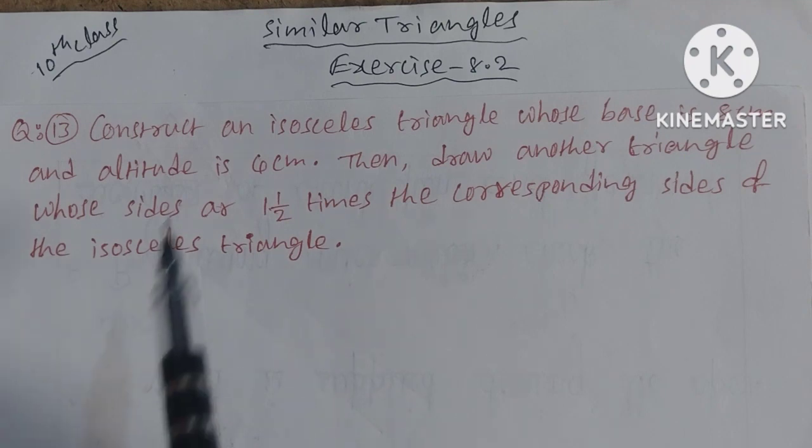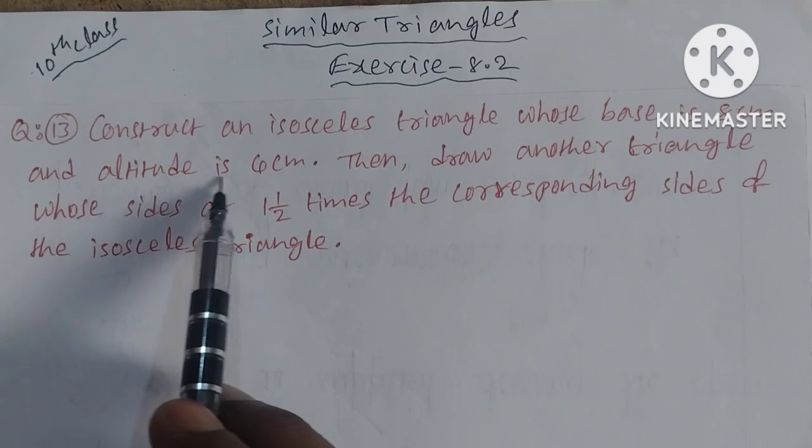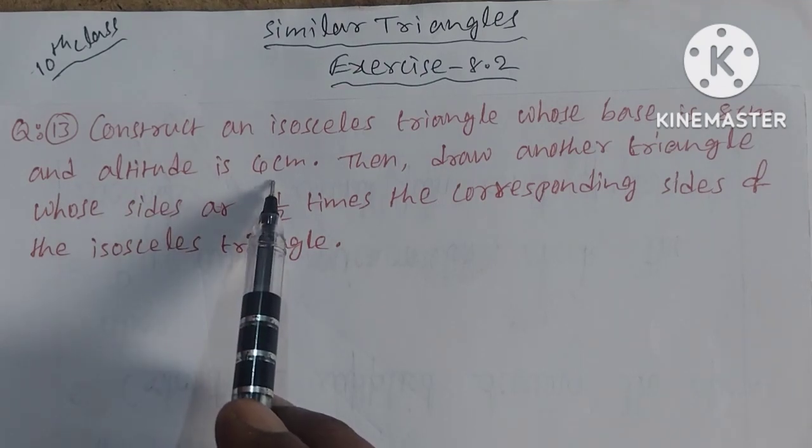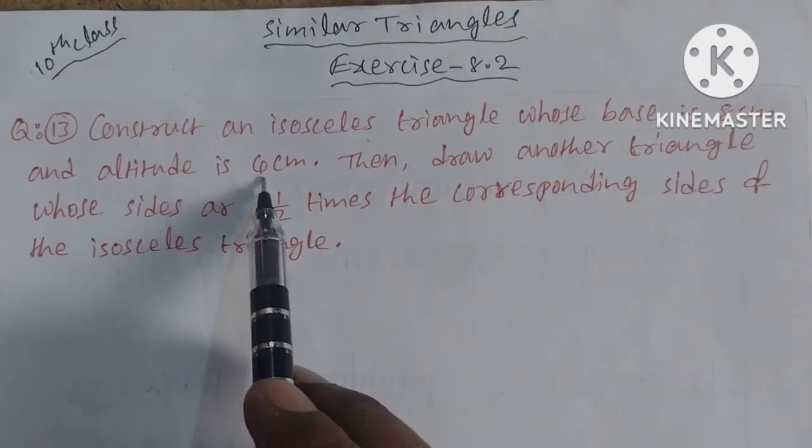We are going to construct an isosceles triangle whose base is 8 cm and altitude is 4 cm. Isosceles triangle means two sides are equal.